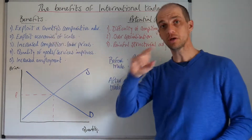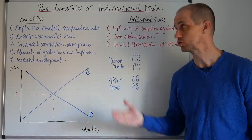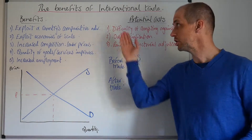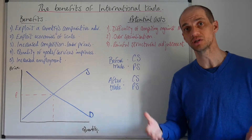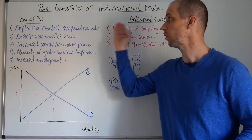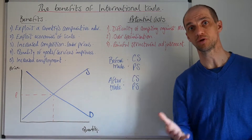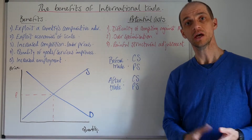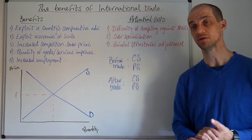First up, you can exploit a country's comparative advantage by using international trade. You can actually ensure that whatever they can do at least opportunity cost to themselves, they are actually focusing production on that. That enables them to specialise in the production of those goods or services, and of course that's likely to be very good news in terms of trade.